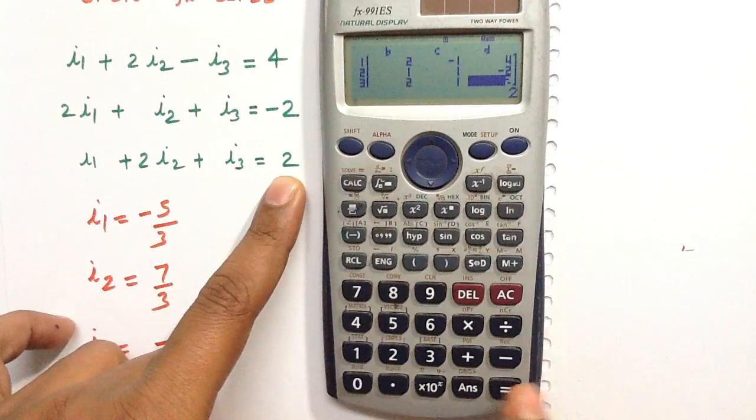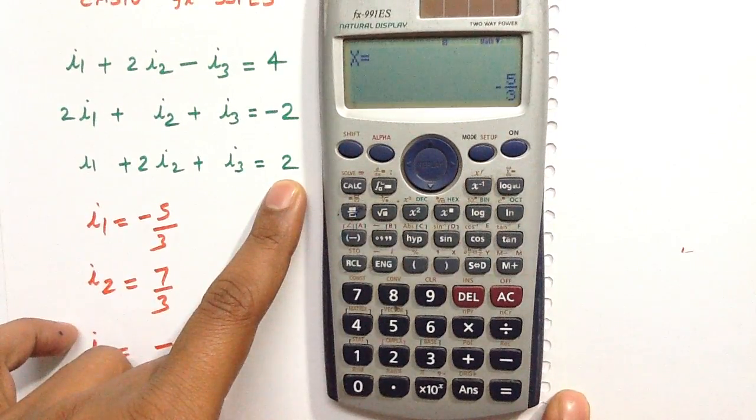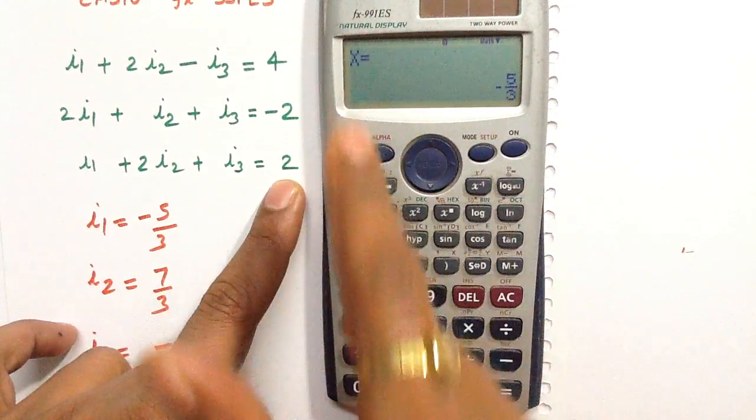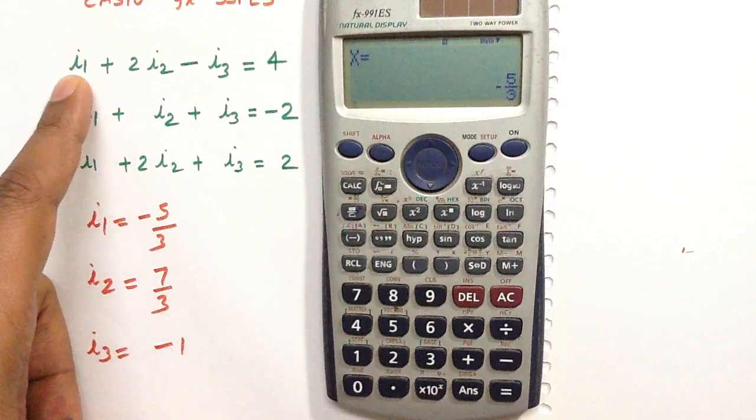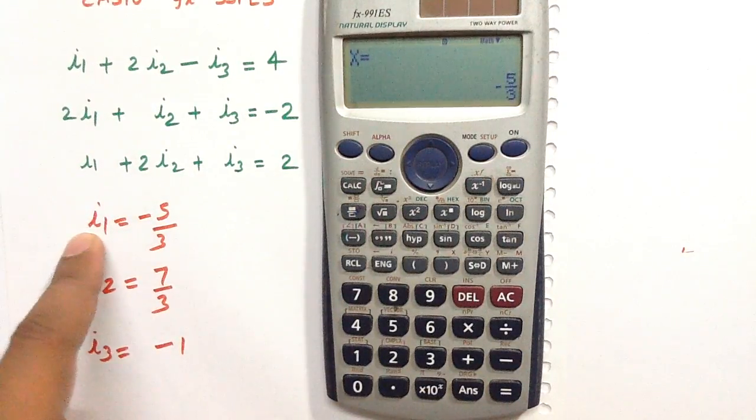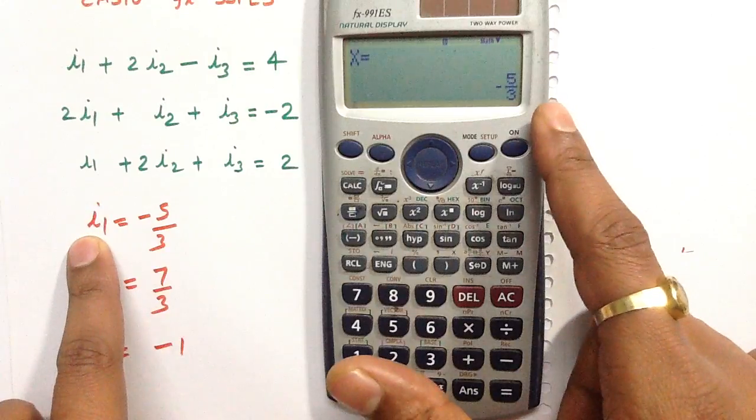To get the solution, press equals. Now you got the value of X, so the value of X is actually the value of I1. So I1 equals minus 5 by 3.